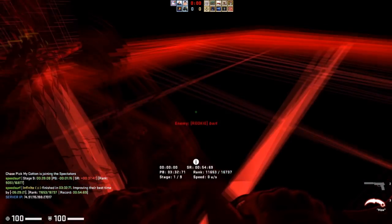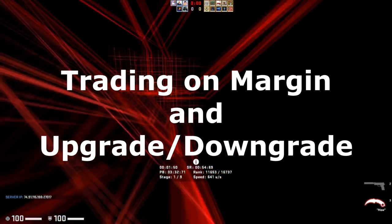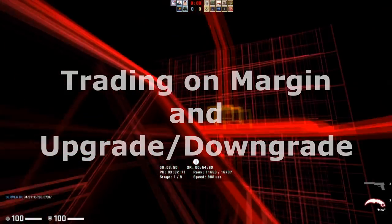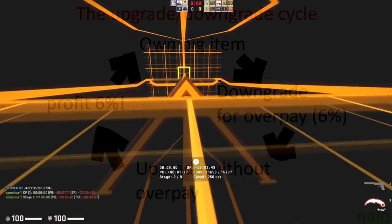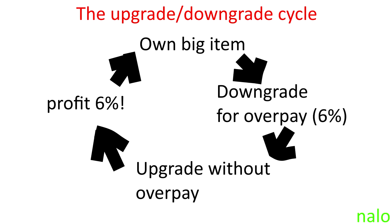The first method is going to be upgrading and downgrading. Basically, upgrading and downgrading is where you upgrade a lot of items into one item and downgrade one item into a lot of items. This is a very good method for making profit because when you downgrade a big item into a lot of items, you can get more money out of the person you're trading with because they have to overpay you. Generally that overpay is 6%, which gets you a 6% profit margin on that trade.